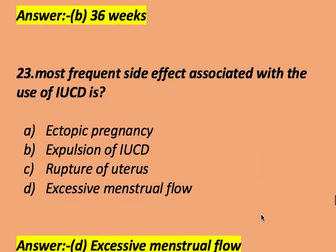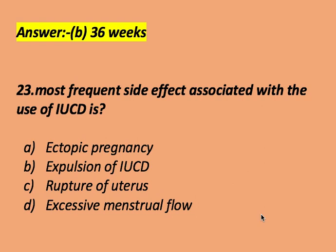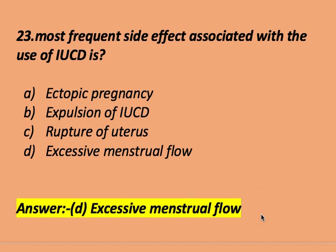The most frequent side effects associated with the use of IUCD or intrauterine contraceptive devices: ectopic pregnancy, expulsion of IUCD, rupture of uterus, or excessive menstrual flow. The right answer is excessive menstrual flow. The most frequent side effect associated with the use of intrauterine contraceptive devices is excessive menstrual flow.